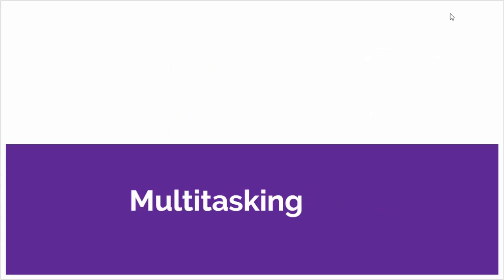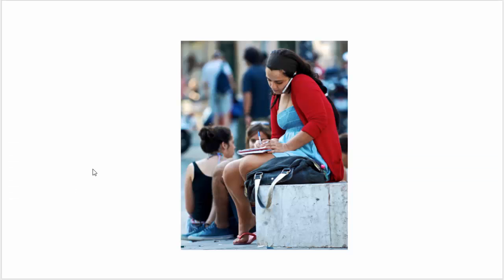Next, we're going to talk about multitasking. What does multitasking mean to you? Looking at this student, you're probably thinking that she's multitasking because she's on the phone at the same time she's writing in her notebook. While that's true, she's doing several other things at once as well — she's sitting on that stoop, she's breathing, she's pressing her right leg against the floor. When humans multitask, we accomplish several things at the exact same time.